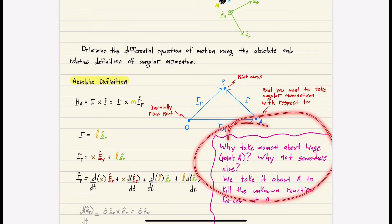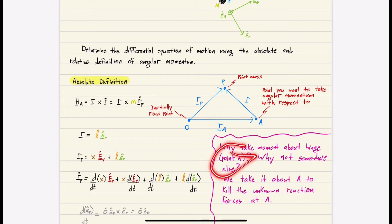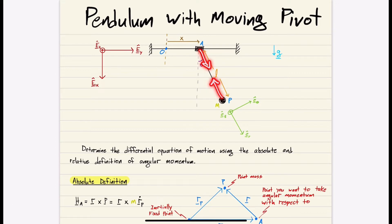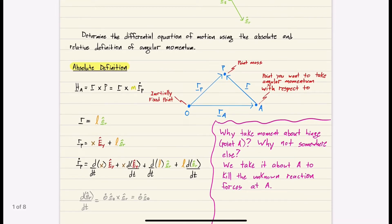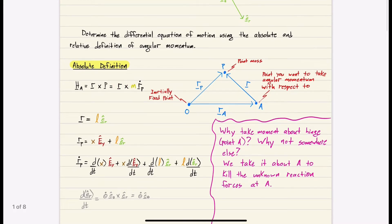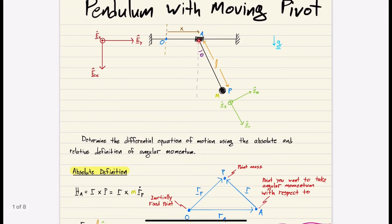Why take the moment about hinge A? Because we need to find the moment with respect to A, and there's an unknown reaction force at the hinge. Since that force acts through point A, when we take the moment at A the unknown reaction force is killed — it goes away. So r, pointing from A to P, is simply L*ER.